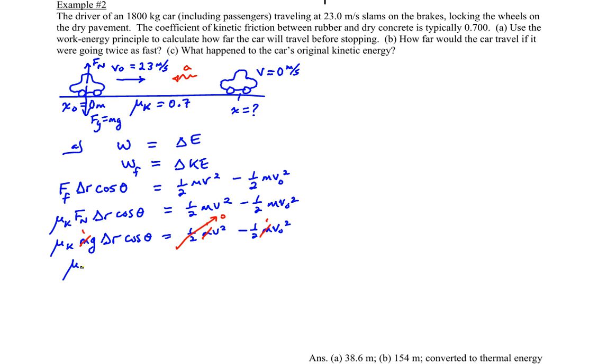So we now have the coefficient of kinetic friction times g times the displacement times the cosine of the angle between the force of friction and the displacement. Now the displacement is going forward, but the force of friction that is slowing it down is in the direction of the acceleration, which is backwards. So in this case the angle is 180 degrees. So this is equal to negative 1/2 v zero squared.